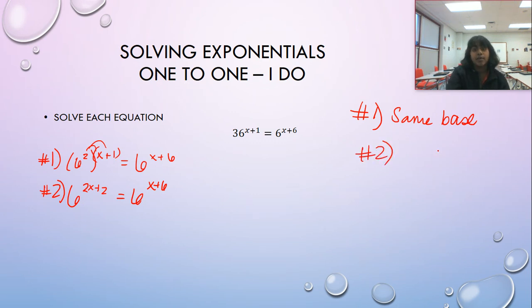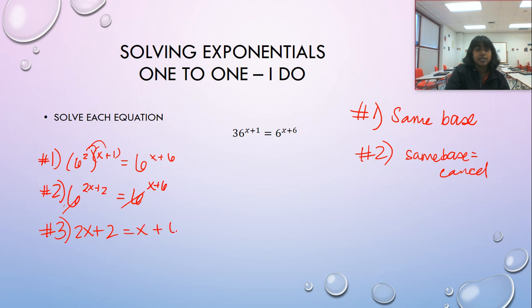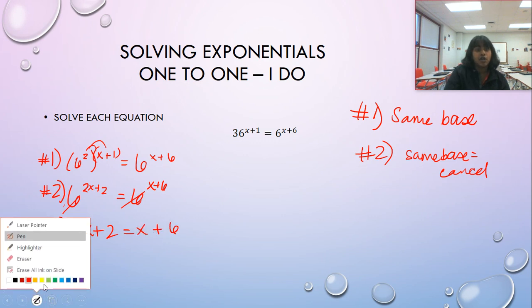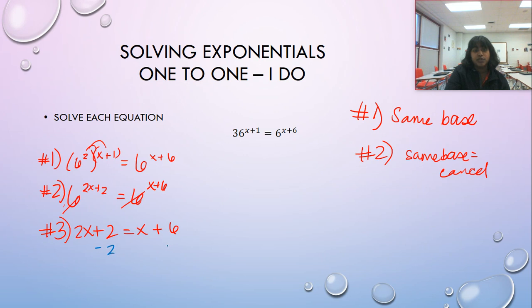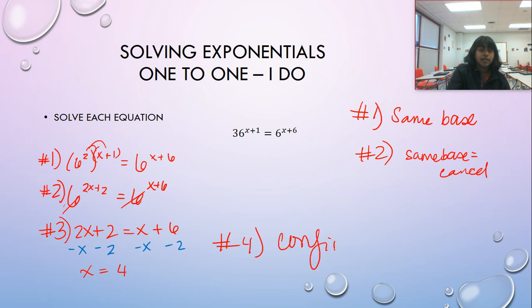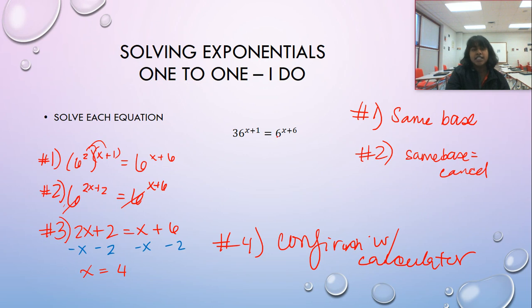This becomes 6 to the 2x plus 2 equals 6 to the x plus 6. Now that you have the same base, cancel out the bases — the 6's disappear — and this becomes 2x plus 2 equals x plus 6. Move over the 2 and the x, and you get x equals 4. You could confirm this with a calculator: 36 to the 5th power is equivalent to 6 to the 10th power.